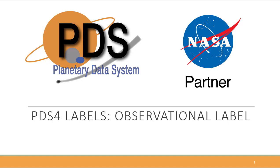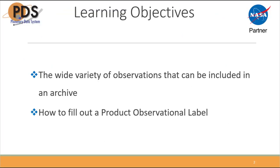This video covers filling out a product observational label for a PDS-4 archive. We will cover the wide variety of observations that can be included in an archive and how to fill out a product observational label. We will be using the Oxygen XML editor to view the label file and PDS-4 viewer to view the contents of the file. Feel free to pause or go back in the video at any time.